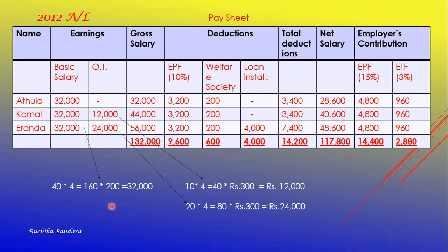Number four deductions: employee contribution to the welfare society per month is 200 per employee, and monthly loan installment for Aranda is 4,000. The first requirement is a pay sheet. The columns are: name, earnings — which includes basic salary and overtime (OT). When you add these two, that is called the gross salary. According to this question there are three deductions: EPF contribution by employee, welfare society, and loan installment. Then a column for total deduction, and gross salary minus total deduction gives the net salary.